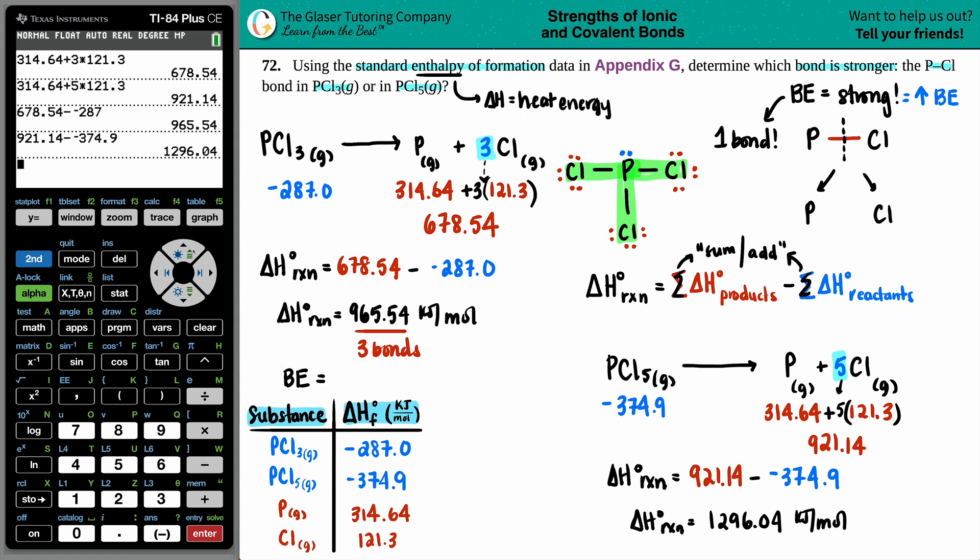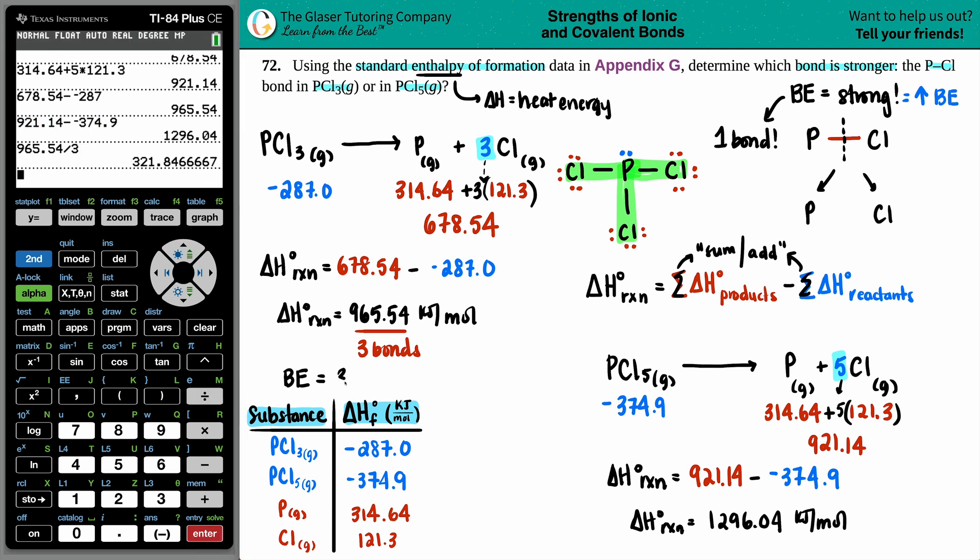That's going to tell us the bond energy for the P-Cl bond. I'm going to take the 965.54 and divide it by three. I get 321.8 kilojoules per mole. We use the place values here because you added, so you got to go by the sig fig rules for adding and subtracting.